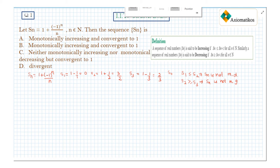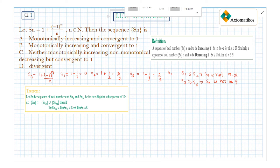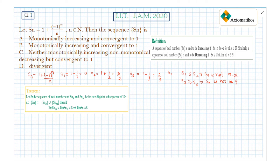Now let us check the convergence of this sequence. For this, let us introduce a theorem. This theorem says that if we have two disjoint subsequences S_nk and S_nm of the sequence Sn, and these two subsequences converge to the same number S, then the original sequence Sn will also converge to S, provided the union of these two subsequences equals Sn.